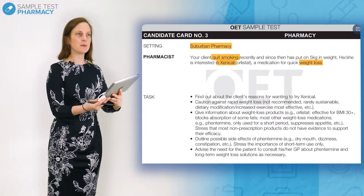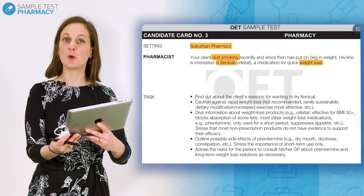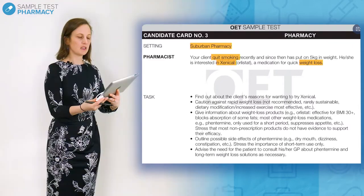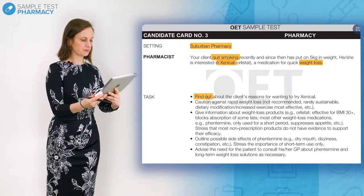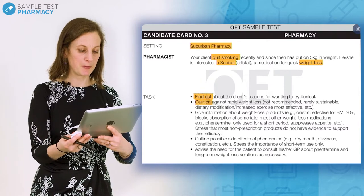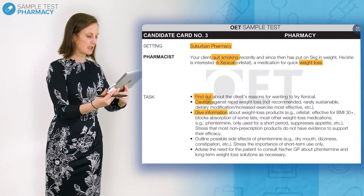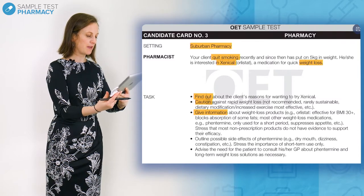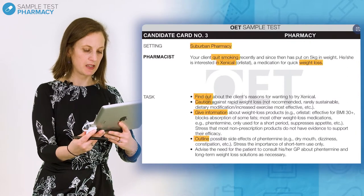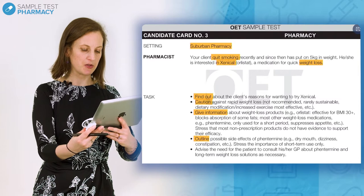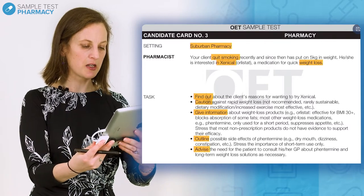Read the tasks to check what needs to be discussed in the conversation. The verbs starting each task are really important in helping me understand what I will say and how I will say it. 'Find out' means to ask questions about the patient's reasons for wanting to try Xenical. 'Caution' means to tell the patient the risks involved with rapid weight loss. 'Give information' means to tell the patient about weight loss products available, but that generally non-prescription products don't have evidence to support their efficacy. 'Outline' means to tell the patient the possible side effects for phentamine, but also to focus on the importance of using it for short-term use only. 'Advise' means to encourage the patient to visit their doctor for long-term weight solutions.